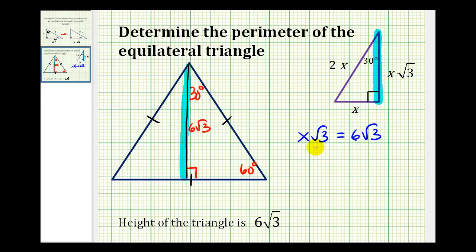Well if we divide both sides by square root three, we have x equals six. Which would tell us the length of the shorter leg of the 30-60-90 triangle, or two times x would give us the length of the hypotenuse.